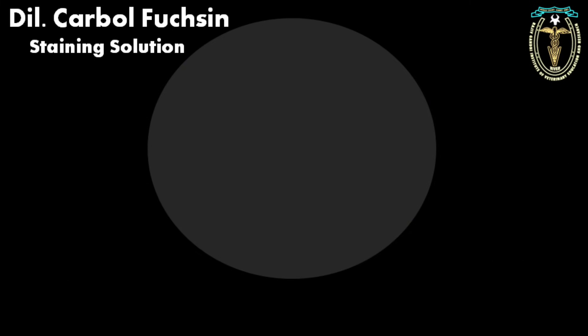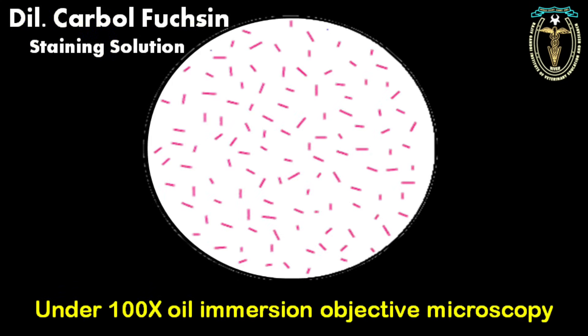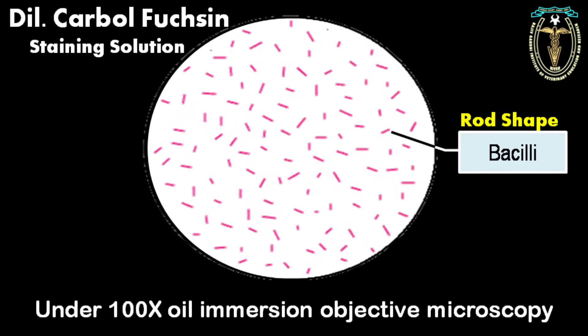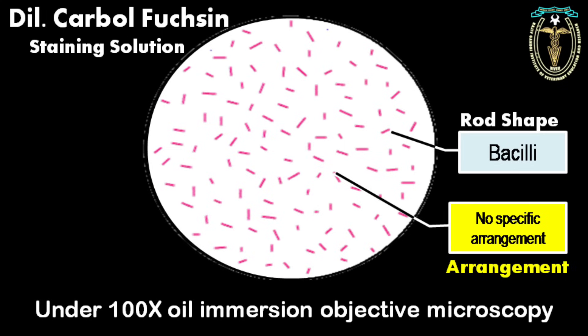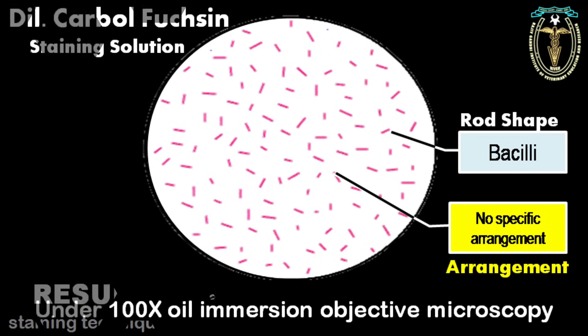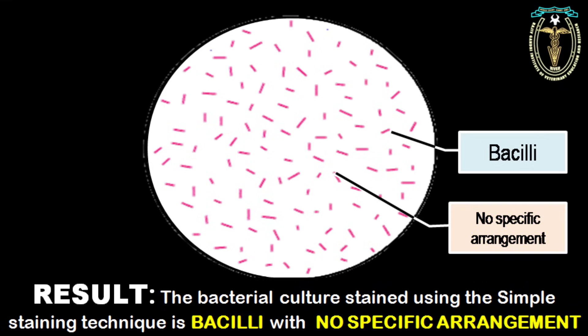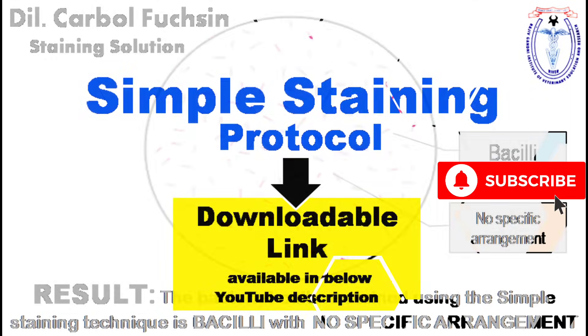In case we use dilute carbol fuchsin staining solution, the microorganism stains pink. Here the organisms are rod shaped, so they are bacilli, with no specific arrangement noticed. So the result is written as: the bacterial culture stained using the simple staining technique is bacilli with no specific arrangement.